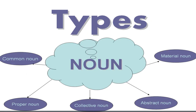Now we will move on to the types of noun. Noun has different types. As you can see in the chart: common noun, proper noun, collective noun, abstract noun, and material noun. We will discuss the types of noun in our next video.